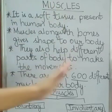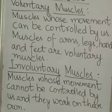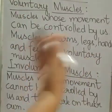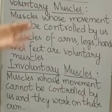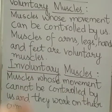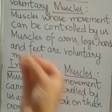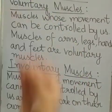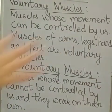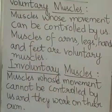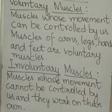Based on their functions, muscles are of two types: voluntary and involuntary muscles. Voluntary muscles are the types of muscles whose movement can be controlled by us. For example, grabbing food to eat, running, jumping, and sitting — all these movements are controlled by us. The muscles of arms, legs, hands, and feet are all voluntary muscles.